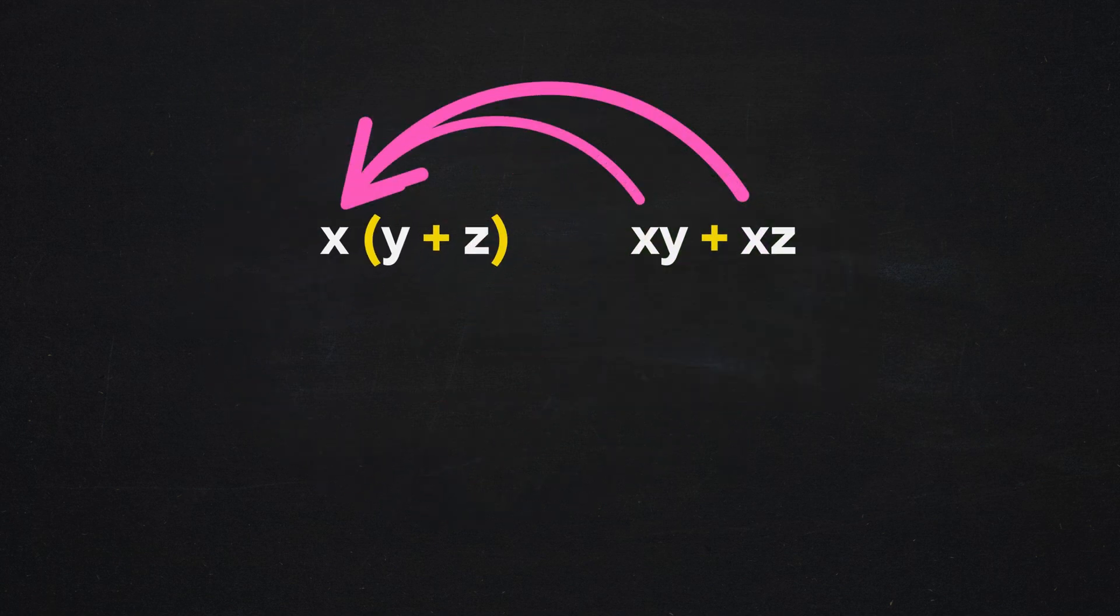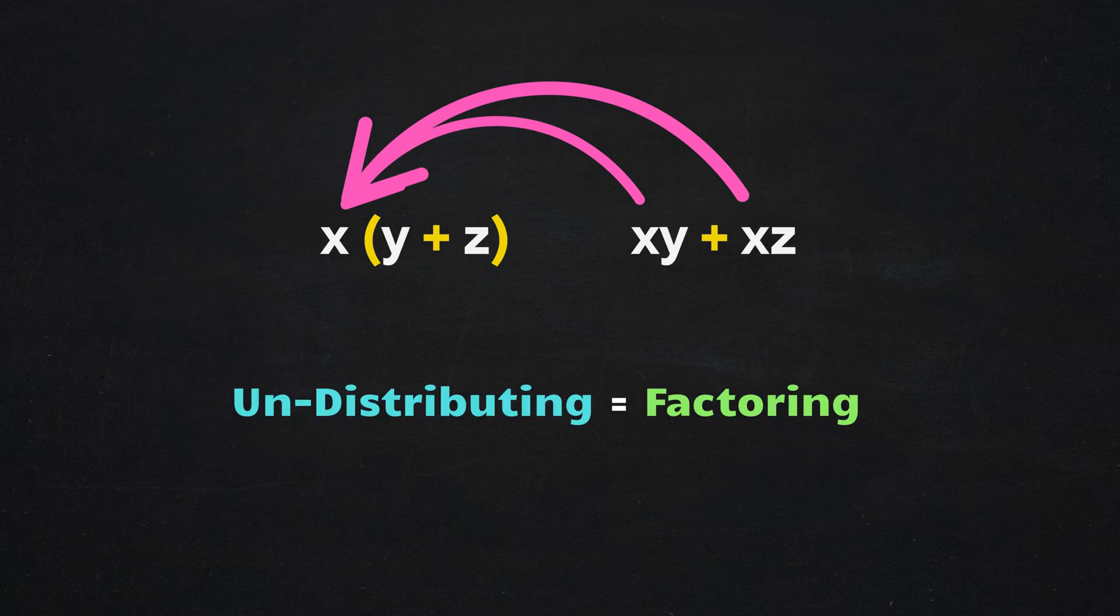This process of undistributing is often called factoring out the common factor. Mathematicians don't typically refer to it as undistributing, but they do call it factoring.